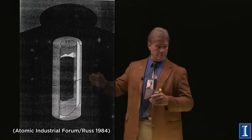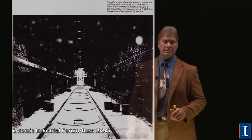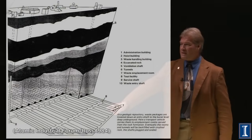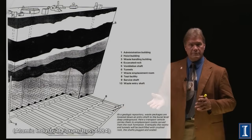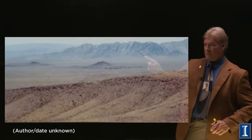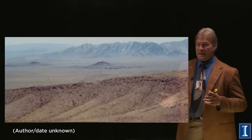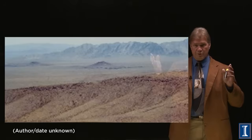Then you'd take this canister and stick it in holes in the ground in solid rock — a place with solid rock a thousand feet below the surface and another thousand feet above the water table, in a desert mountain. Like this desert mountain: Yucca Mountain in Nevada. It's geologically stable, nobody lives there, it's in a desert. You could put the waste there and rest assured it would just sit there virtually for eternity.